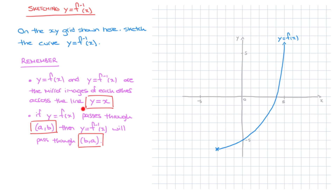I'll draw the line y equals x on this x-y grid. That's the line passing through the origin whose gradient is 1. So it will pass through this point here, this point here, this point here, and so on. There we go — that's the line y equals x.